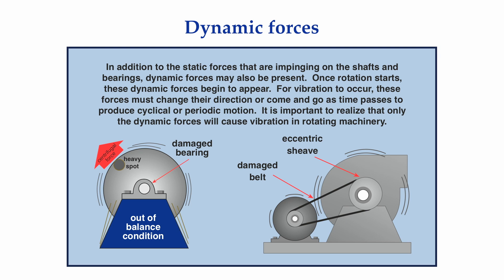Forces that are periodic and repetitive in nature are defined as dynamic forces. A classic example of a dynamic force is an out-of-balance condition. At some point on a rotor, a heavy spot may exist. The instant rotation starts, the heavy spot changes its angular position and begins producing a centrifugal force. Even though the frames and casings of our machinery are fabricated from metal, metal is elastic and will deflect when a force is applied to it. Since the direction of the force is continually changing, the elastic support trying to hold the shaft in a stable position responds to the centrifugal force and consequently deforms elastically. This repetitive elastic deformation from the circulating centrifugal force is referred to as vibration.